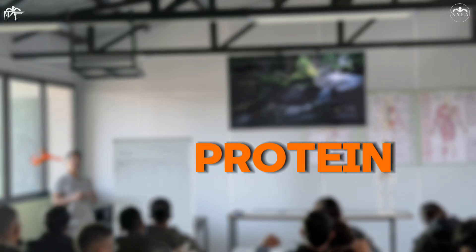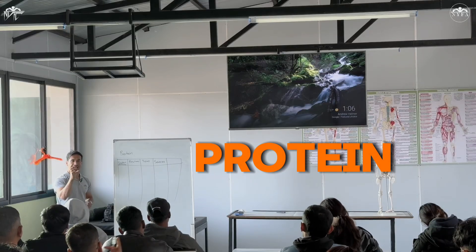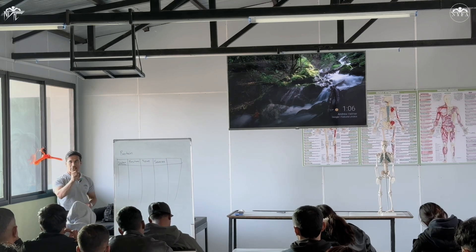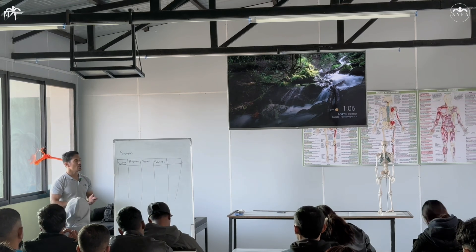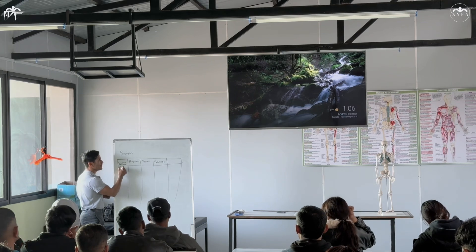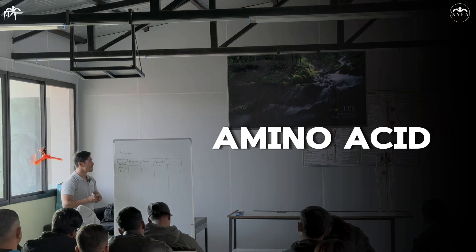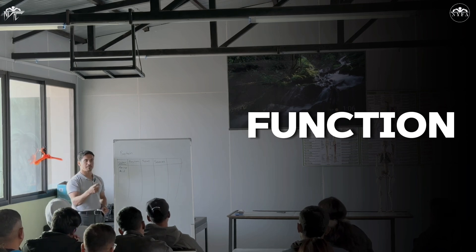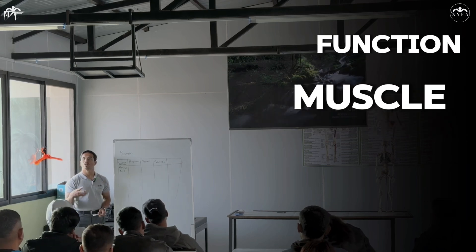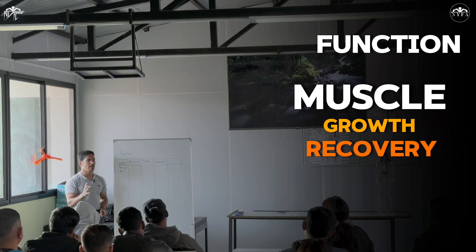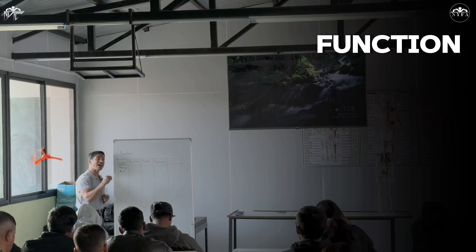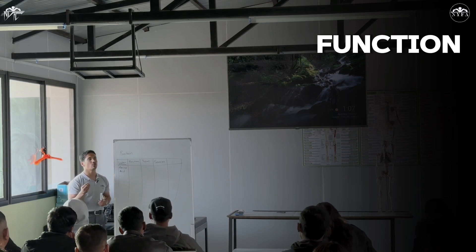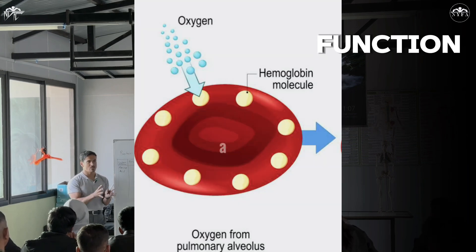Protein is a macronutrient — when we say macronutrient, it means it provides energy. It's made up of smaller units called amino acids. Its primary functions include muscle growth and recovery. It also helps form hemoglobin, which is responsible for oxygen transport in the body.